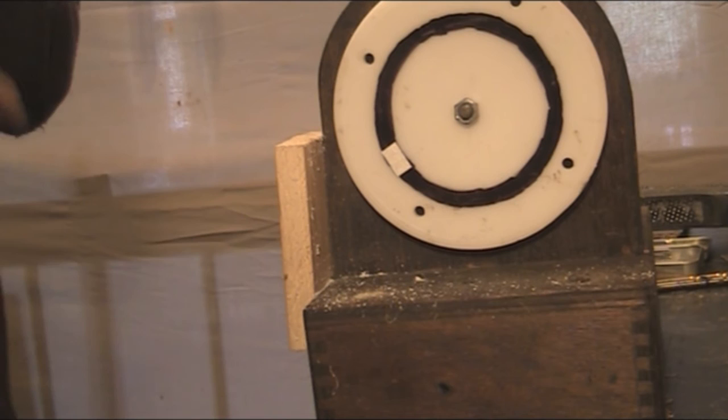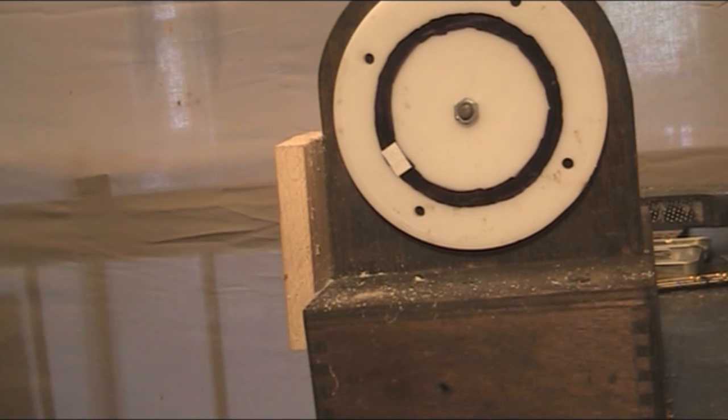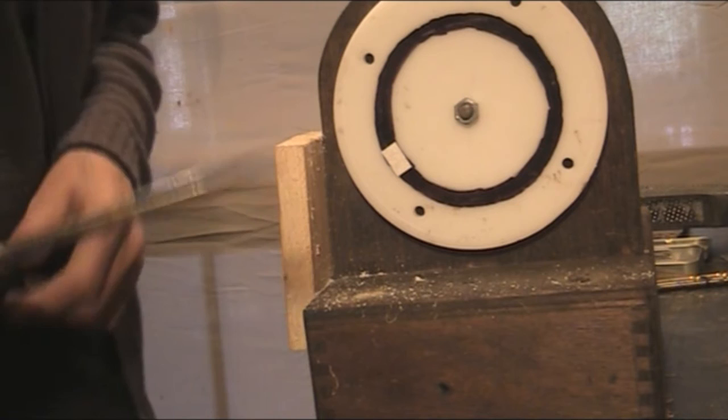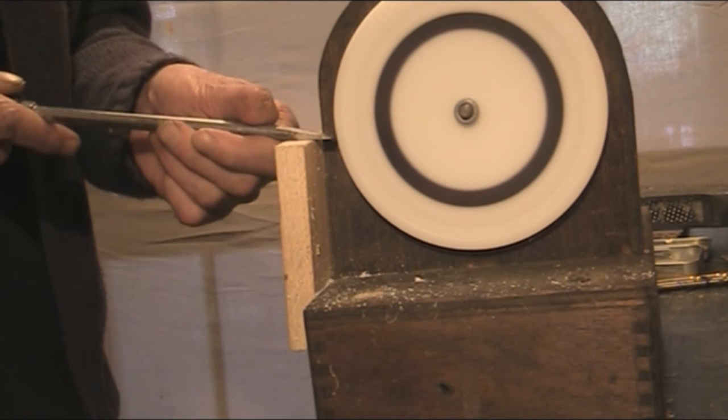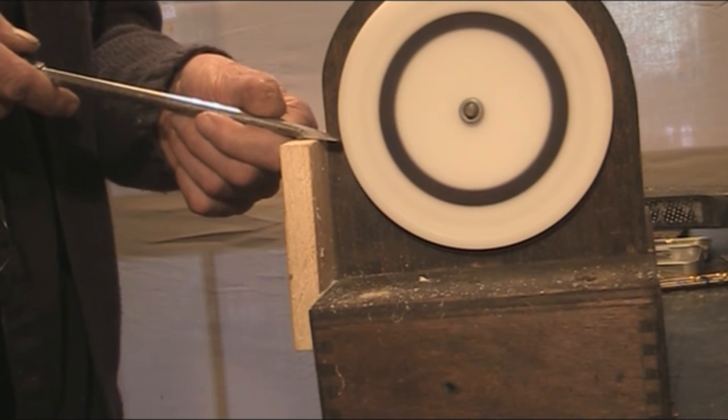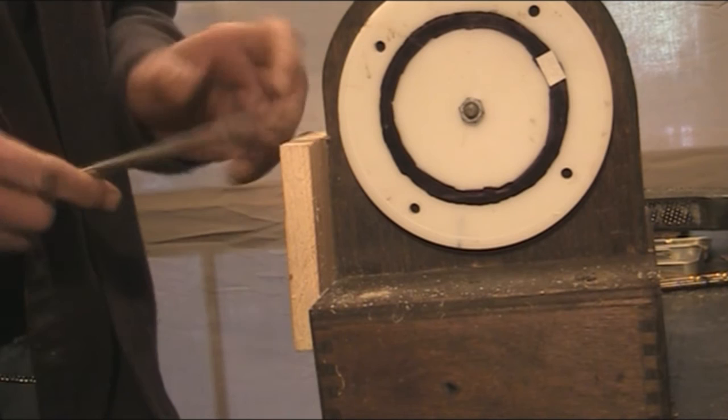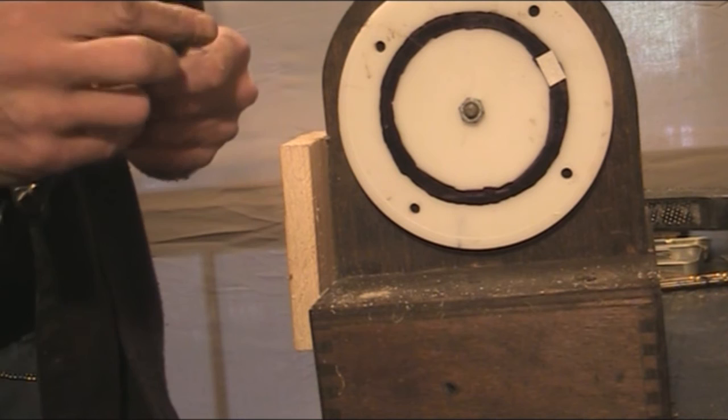Now what happens if you haven't got a chisel? Well, just about any piece of metal will suffice. Got a screwdriver there, nice square edge on there. Hopefully not a rounded edge otherwise it won't work very well. It is taking shavings off but it's very slow. This one's got a bit of a rounded edge, should be nice and square, but it will work.